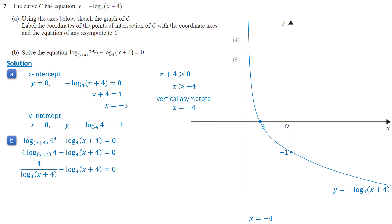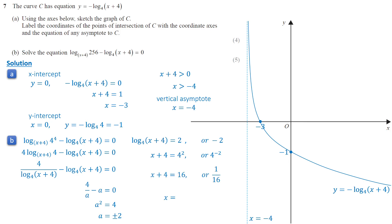Let log base 4 of (x+4) equal a. We have 4 over a minus a equals 0. Solving for a, we get a equals plus or minus 2, meaning log base 4 of (x+4) equals 2 or negative 2. In exponent form, x + 4 equals 4 squared or 4 to the negative 2. Solving for x, we get x equals 12 or negative 63 over 16.